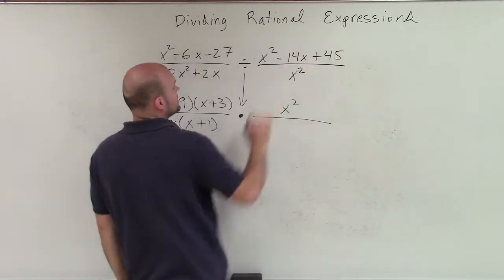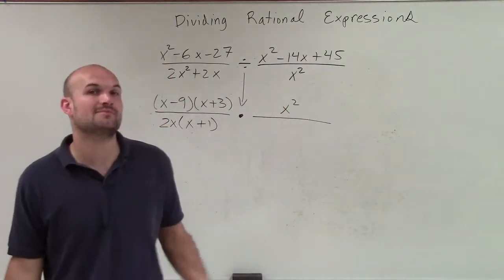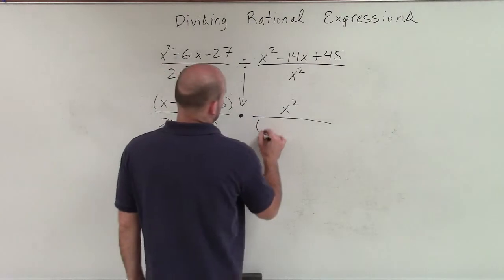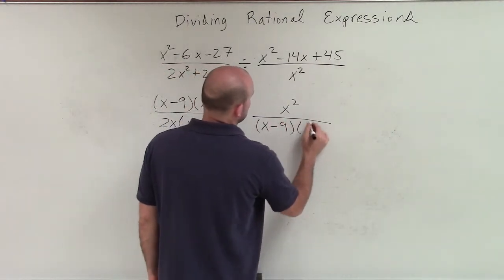So again, my a is 1, so I need to determine what two values multiply to give me 45, but then add to give me a negative 14. Well, that's going to be x minus 9 times x minus 5.